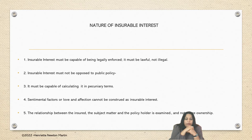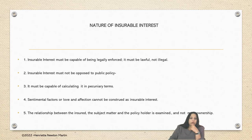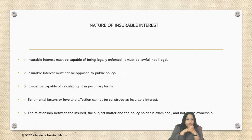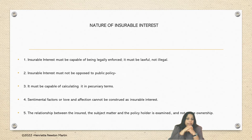For example, someone who was in love with a person but that person got married to someone else and had a life insurance policy — the mistress cannot come and say that since he loved her, the life insurance policy should benefit her. Sentimental factors or love and affection cannot be construed as an insurable interest or as a party having an insurable interest. The relationship between the insurer, the subject matter, and the policyholder is examined — and not the ownership.